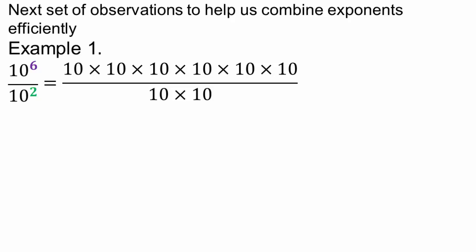Remember equivalent fractions — what does equivalent fractions allow you to do? You can divide the numerator and denominator by the same quantity. We have the same numbers, 10, on the numerator and denominator, so I can divide numerator and denominator by 10 and another 10, reducing this fraction. Each 10 divides into 10 once, so you're dividing each of these by 10.